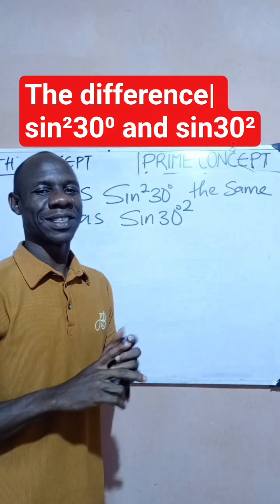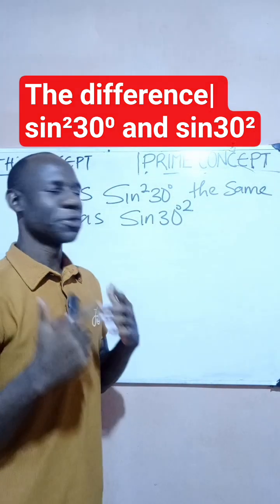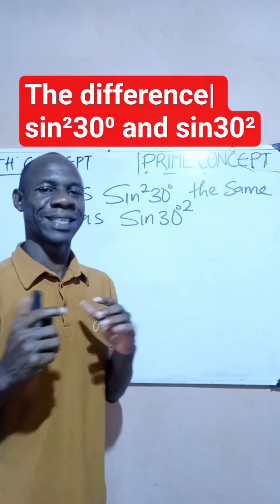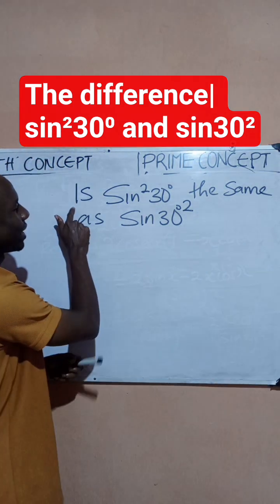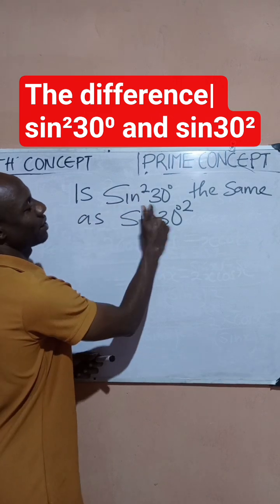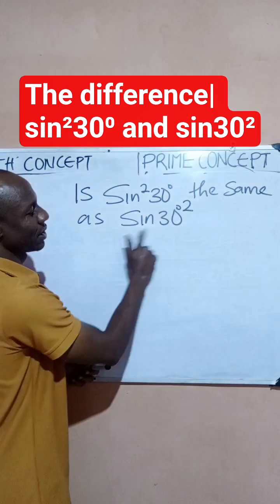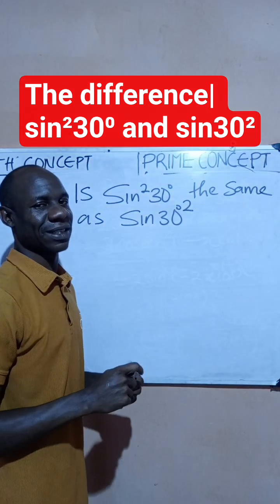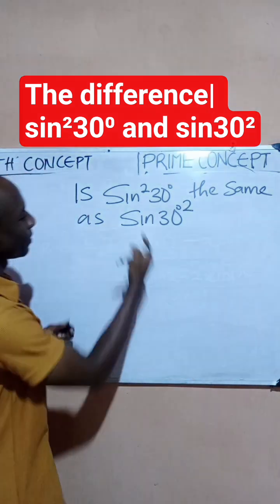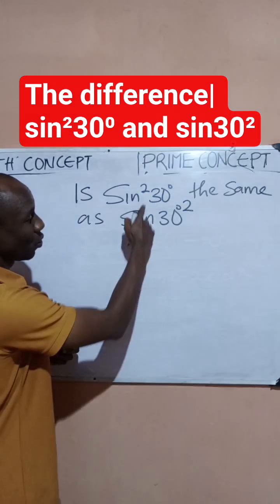Hello guys, Prime Concept. A quick one that confuses a few students under trigonometry, so let's look at this and clear the question. It says: is sin²30 the same as sin 30 degrees all squared? Are they the same? Drop your answer in the comment section before you watch. Now quickly, they are not actually the same.